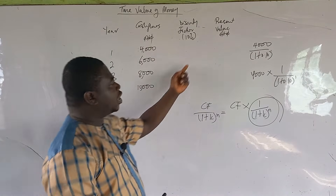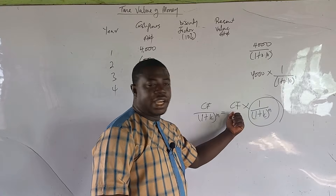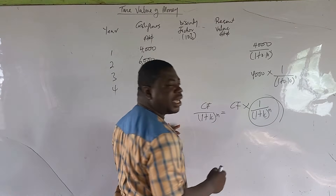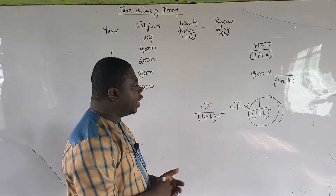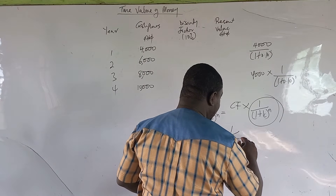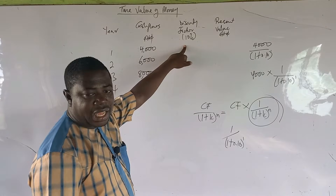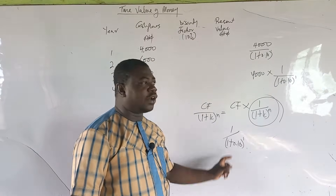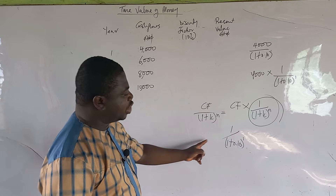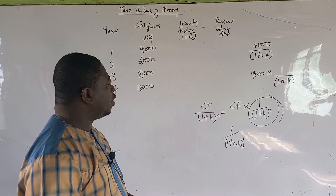Once we have the cash flow, we multiply by the discounting factor to get the present value. So we only need to find the value of 1 over (1 + k) raised to the power n. This becomes the discounting factor. For year one: punch 1 over (1 + 0.10) raised to the power one on your calculator. If you have a present value table, just trace 10% at year one to get the same value.